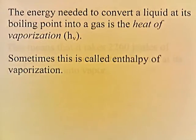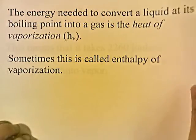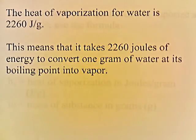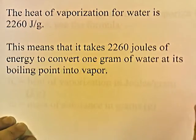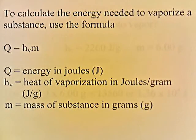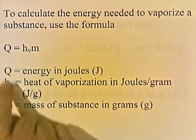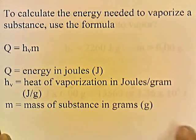The energy needed to convert a liquid at its boiling point into a gas is the heat of vaporization, H sub V, sometimes called the enthalpy of vaporization. The heat of vaporization for water is 2,260 joules per gram, meaning it takes 2,260 joules of energy to convert 1 gram of water at its boiling point into vapor. To calculate the energy needed to vaporize a substance, we use the formula Q equals H_V times M, where H sub V is the heat of vaporization in joules per gram and M is the mass in grams.